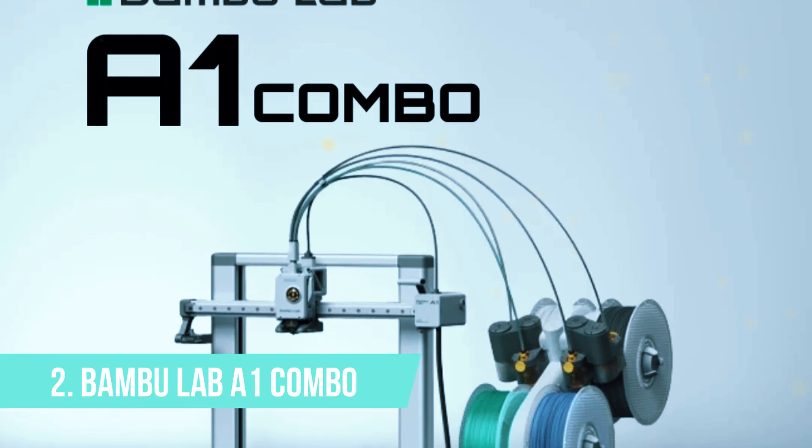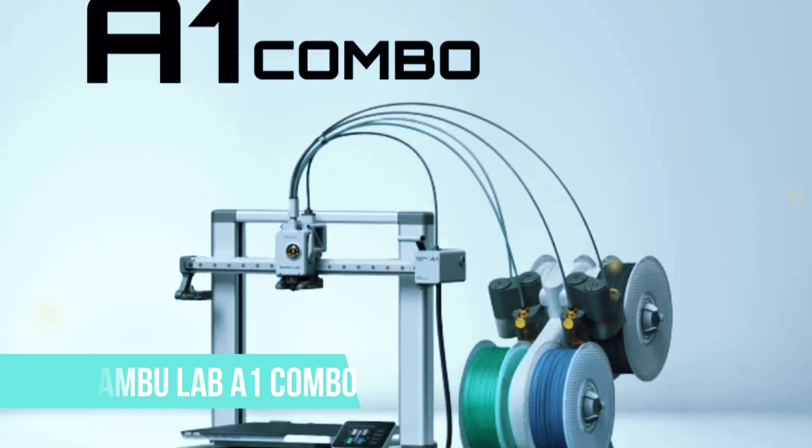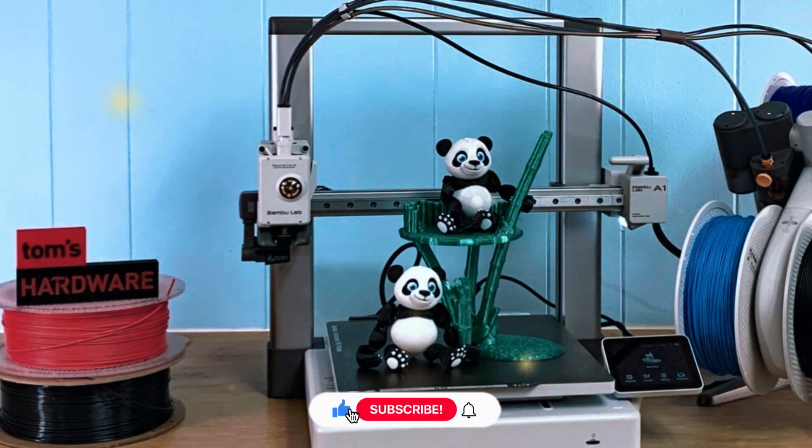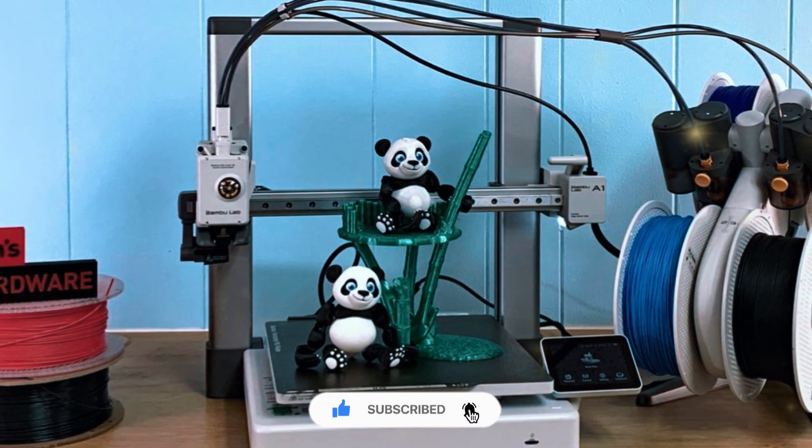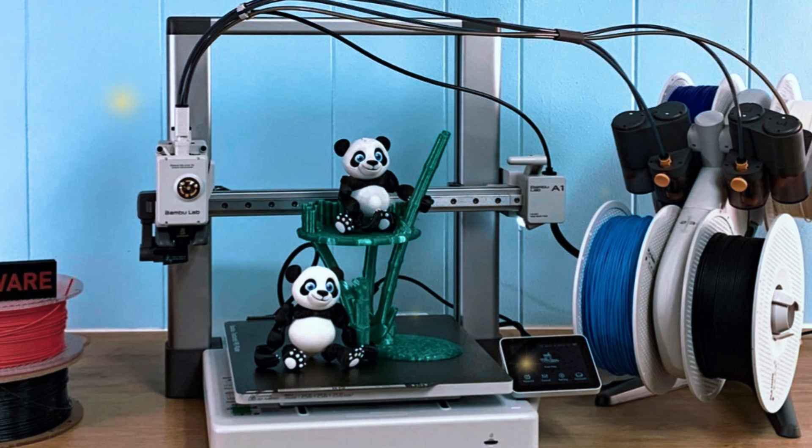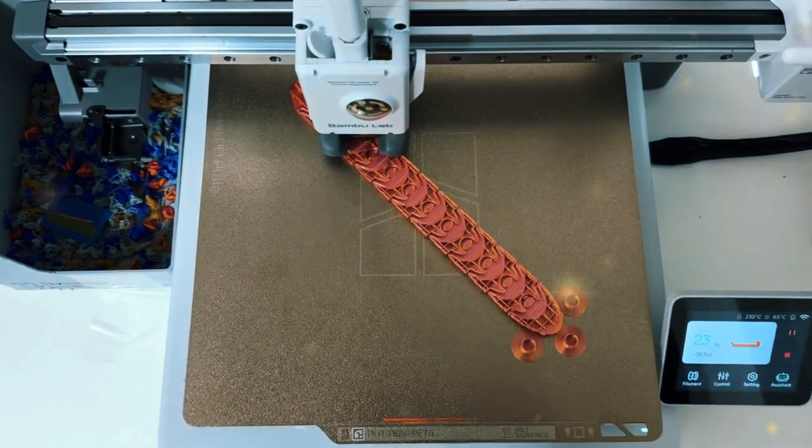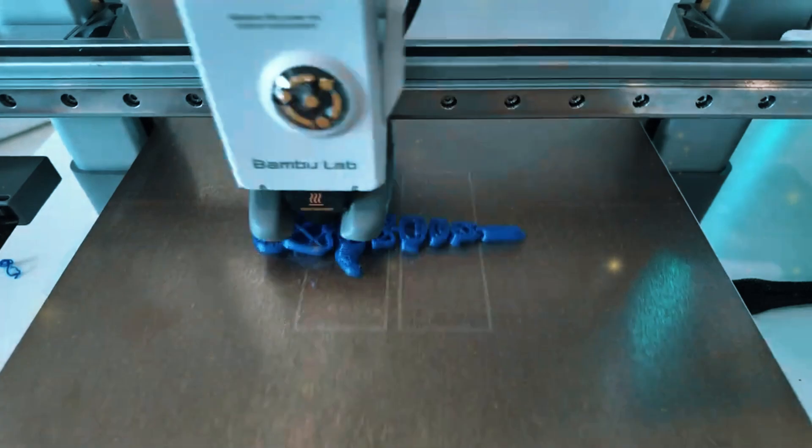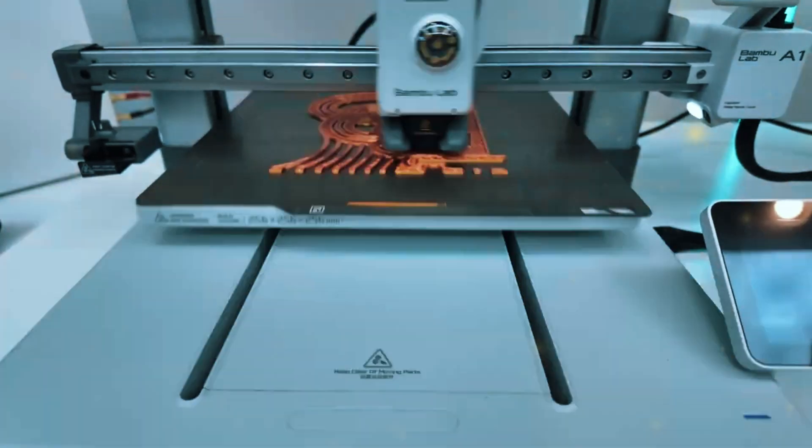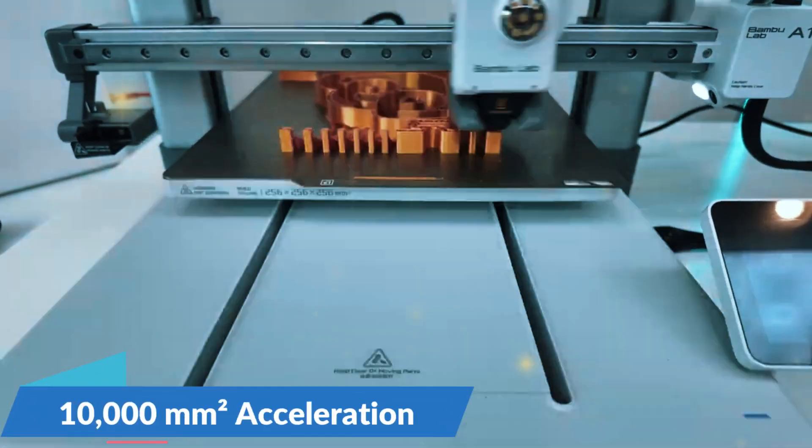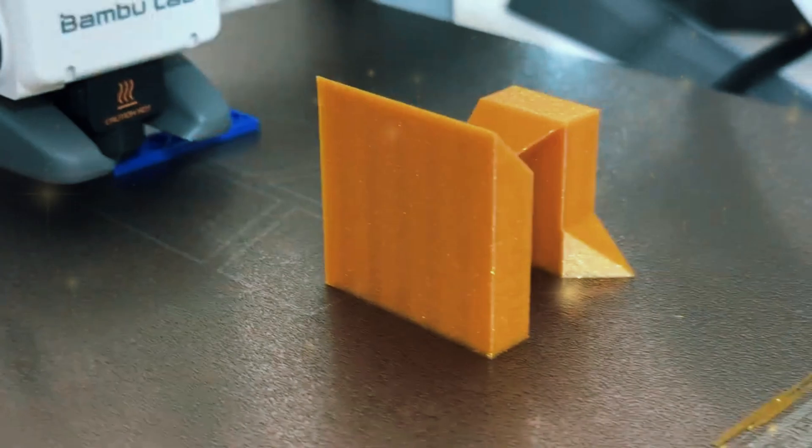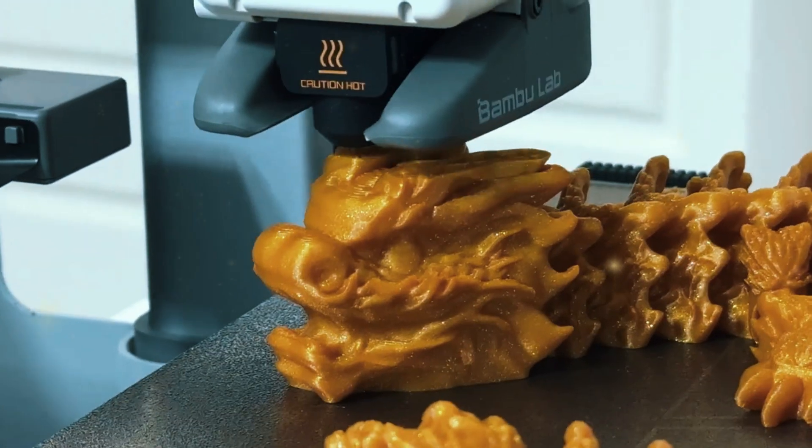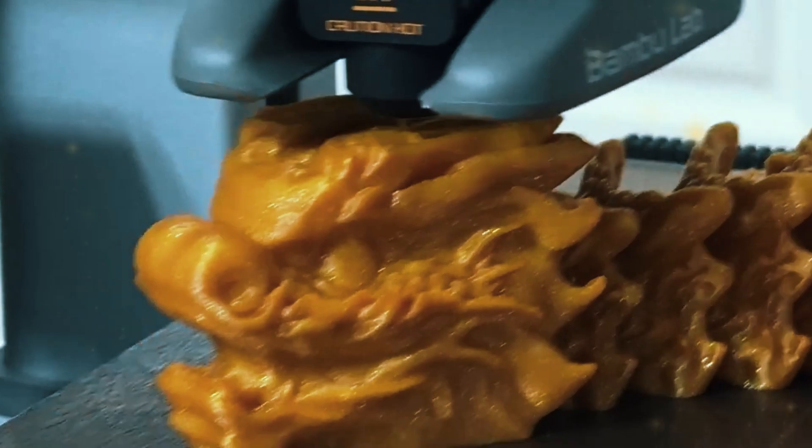Number 2: Bamboo Lab A1 Combo. Next up is the Bamboo Lab A1 Combo, an impressive 3D printer that stands out for its blend of speed, precision, and multi-color printing capabilities. Designed with both beginners and professionals in mind, the A1 Combo offers incredible printing speeds thanks to its 10,000 square millimeter acceleration. This allows you to complete projects quickly without compromising on quality, making it ideal for those who want fast, detailed prints.